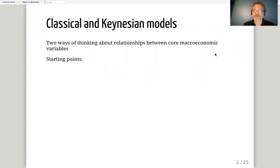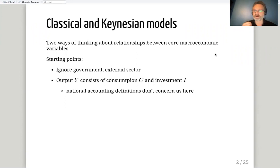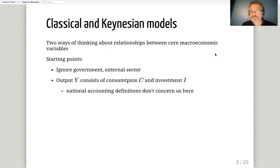These are two ways of thinking about the relationships between our core macroeconomic variables, and they have certain important things in common. First of all, both models describe an economy with no government and no external sector — there's no fiscal policy, no explicit monetary policy, and no foreign trade. We've abstracted away from those dimensions of the economy.